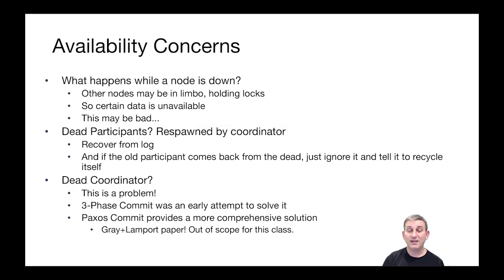There are concerns about availability in a transactional distributed system. What happens if one node goes down? When one node is down, other nodes don't know if a transaction is committed or aborted — they're in limbo. And if they're in limbo, they're holding their strict two-phase locks, so certain data is unavailable. If another transaction wants to look at that data, it'll end up on a wait queue on a lock, and that lock is not going to clear while the node is down. Availability of distributed transactions is not great. If you want to build a high-availability system that can survive the failure of a single node, two-phase commit introduces certain tricky issues you have to solve in some other way.